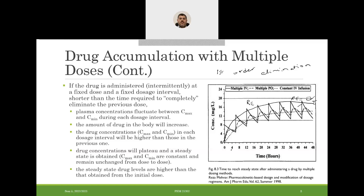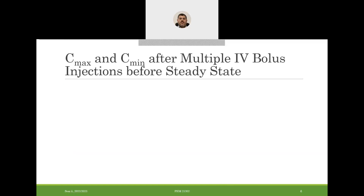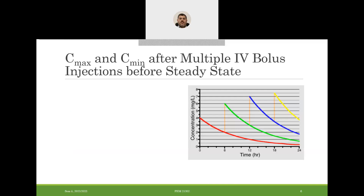Once steady state is achieved — say after the fifth dose — the sixth, seventh, eighth, and twelfth doses will all have the same C-max and the same C-min. Now we want to look at the equations to calculate C-max and C-min after multiple IV bolus injections before steady state, and then discuss the equations at steady state.